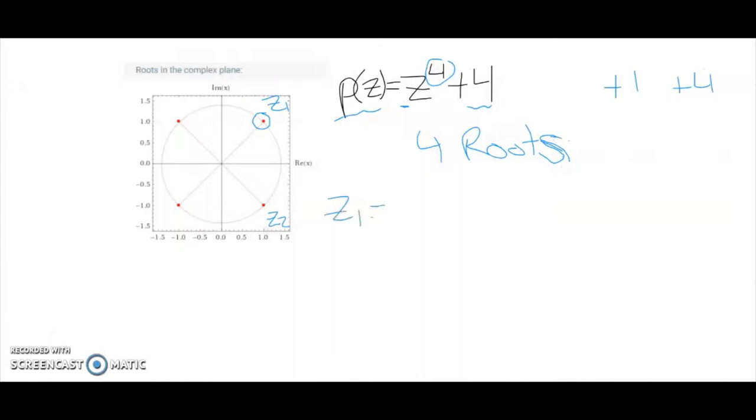z1 is equal to 1 plus i, because it is 1 along the real and 1 in the imaginary. Its complex conjugate is 1 in the real and then negative 1 in the imaginaries. So that's 1 minus i.